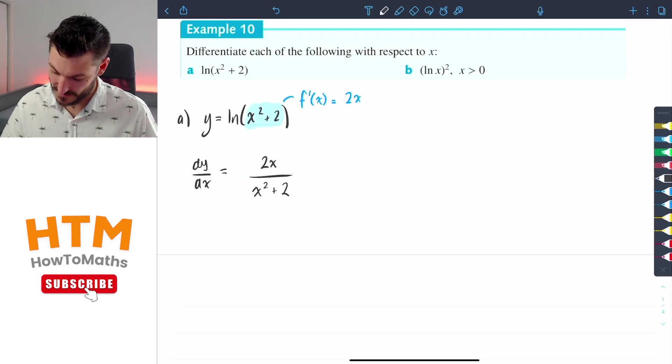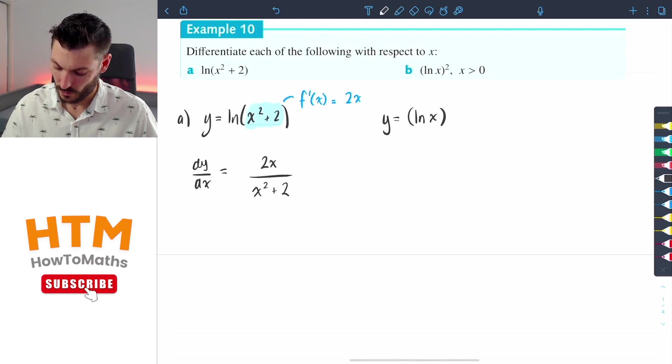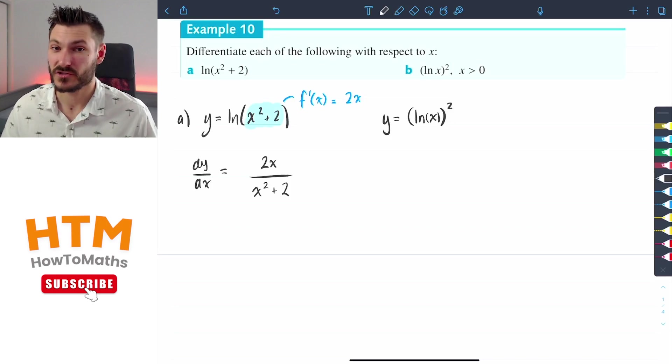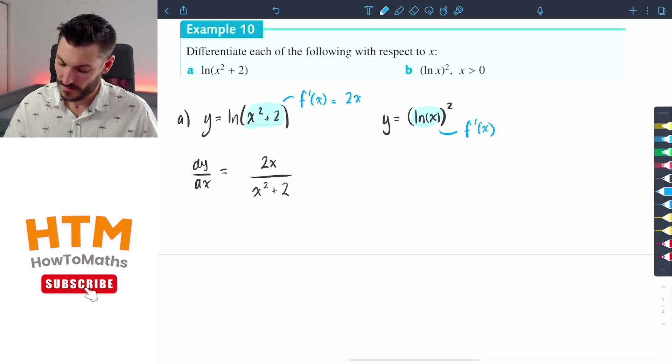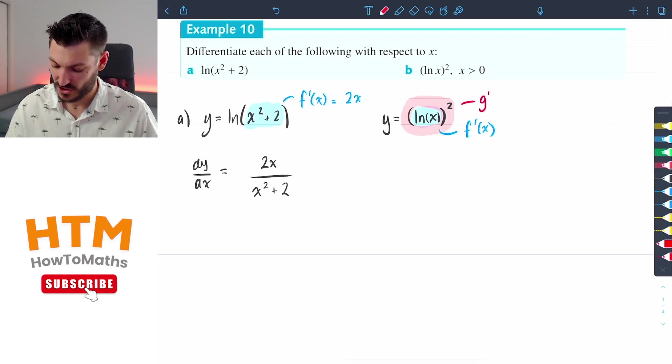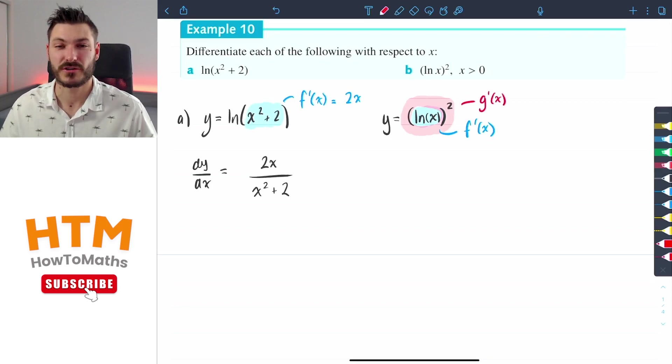And lastly this derivative here when we've got y equals ln of x all squared. Now ln of x's derivative is just 1 over x, but we have it being squared. So this is going to be an instance where we need to use the chain rule, which means that I'm going to have the derivative of this f'(x), and I'm also going to have the derivative - and this is going to be a weird way to annotate it - but the derivative of this outer function here which is going to be my g'(x).